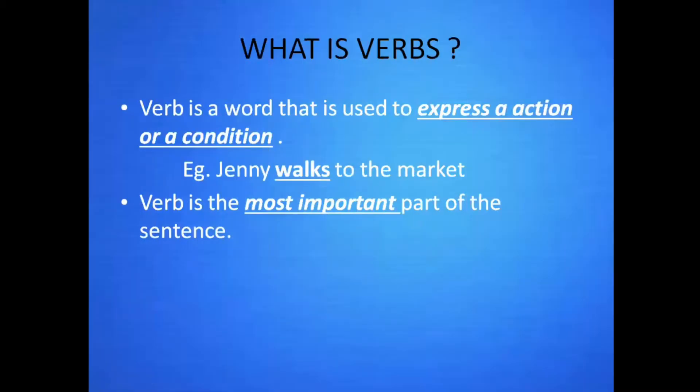What is a verb? A verb is a word that is used to express an action or a condition. For example, Jenny walks to the market. Walks is an action and it is a word. Verb is the most important part of the sentence.